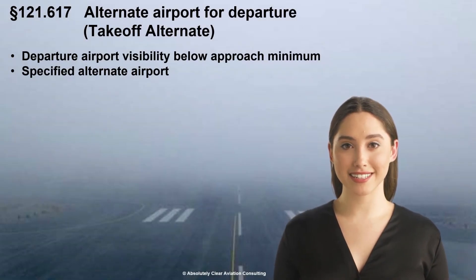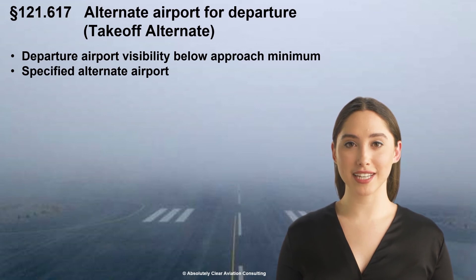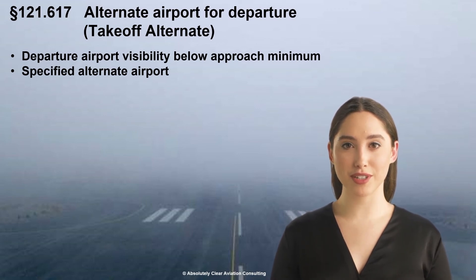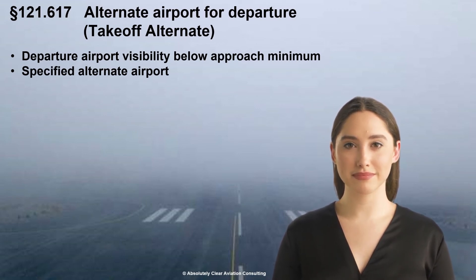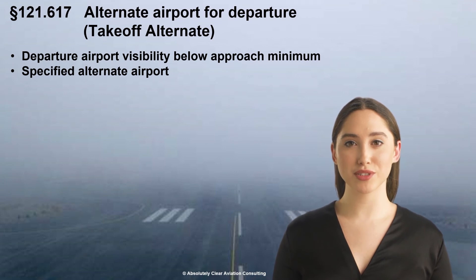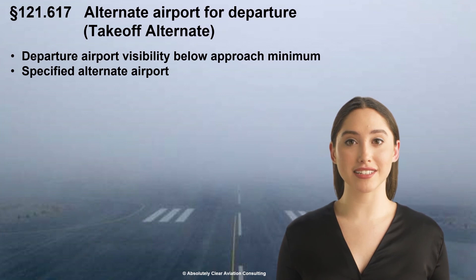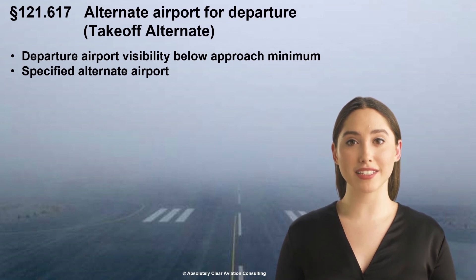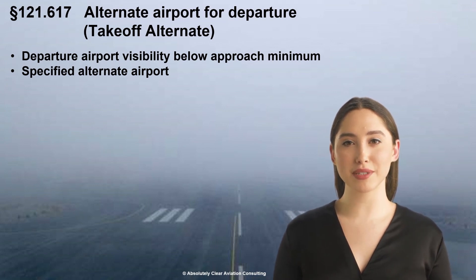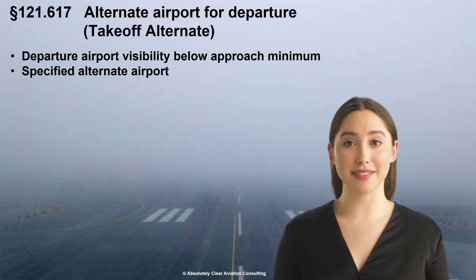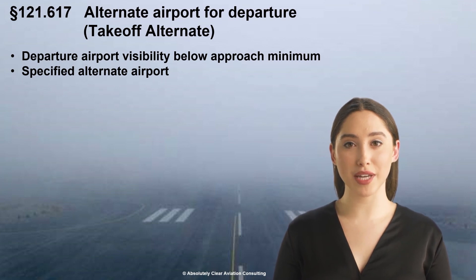That concludes this lesson on FAA 121.617, alternate airport for departure, also known as a takeoff alternate. In summary, if authorized takeoff minimums are lower than applicable approach minimums to return to the departure airport and land after takeoff, and the visibility at the time of departure is lower than approach minimums, an alternate airport must be specified at the time of departure and is subject to certain requirements of its own. I hope I've been helpful and invite you to check out my other lessons. Please let me know if there are other aircraft dispatcher subjects you're interested in.